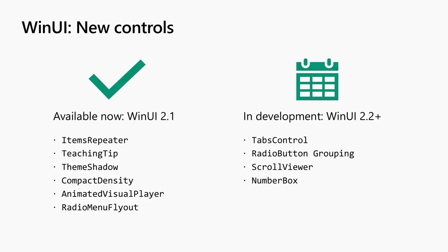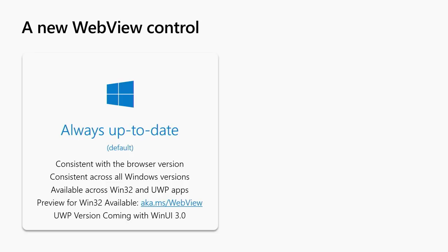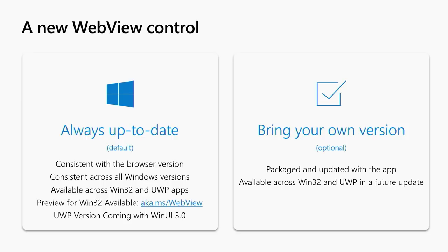Another control we want to talk about is the new WebView. Some of you who went to talks yesterday may have heard that Microsoft Edge is moving over to be based on Chromium to get better web compatibility and other improvements. We want to bring these same improvements to your application via the WebView. There's actually a preview version of the Win32 WebView available today, and this is a version of the WebView based on that same Chromium-backed version of Microsoft Edge. There's also a UWP version of this control coming with WinUI 3.0. By default, these WebViews will be always up to date, meaning they're aligned with the version of the browser shipping on your actual machine.